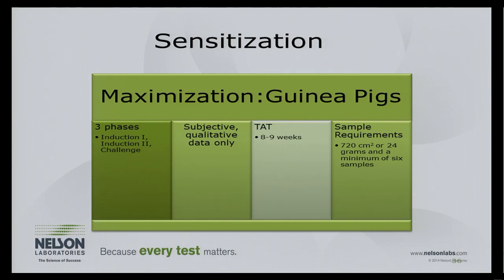Because sensitization requires multiple exposures, the GPMT has three phases. In the first induction phase, we inject extract into the guinea pig and wait for the immune system to process it. In the second induction phase, we inject again and wait again. Then in the challenge phase, we apply a wet patch over the injection site and observe for redness and swelling. Because it's systemic, we can only inject one animal at a time with multiple exposures. This entire process takes eight to nine weeks.